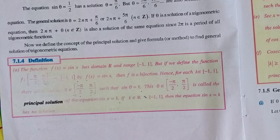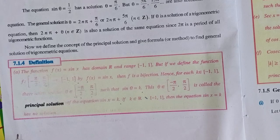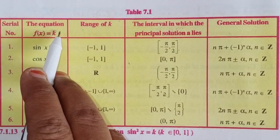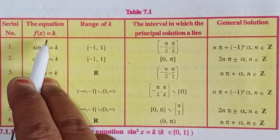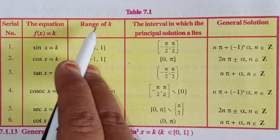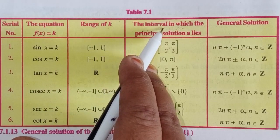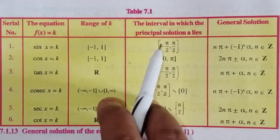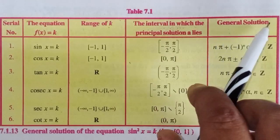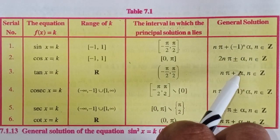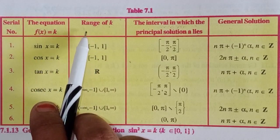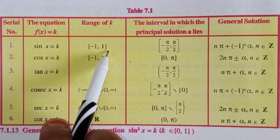Overall, I will explain in tabular form. The columns are: trigonometric equation f(x) = k, range of k, the interval in which the principal solution lies, and the general solution. For sin x = k, the range is [−1, 1] and the principal solution lies in [−π/2, π/2].